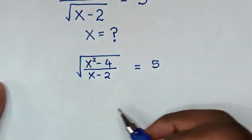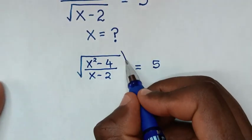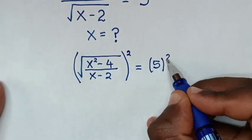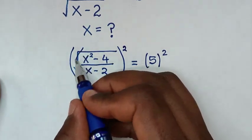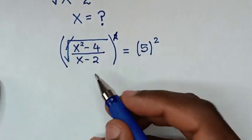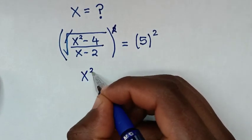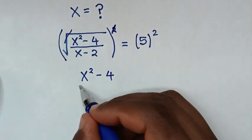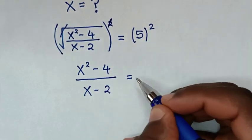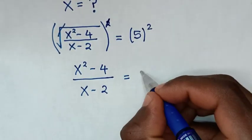Then the next step, to remove this square root, we will square both sides. So this square root will cancel with this square. Then it will be x square minus 4 over x minus 2 is equal to 5 square is 25.